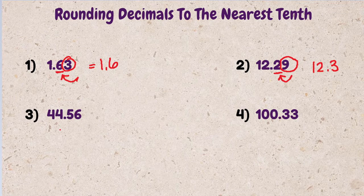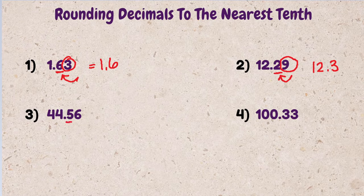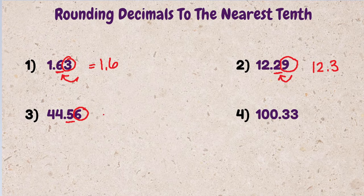Third example: 44.56. 5 is in our tenth position. 6 we want to evaluate. 6 is higher than 5, so 44.56 rounds to 44.6.